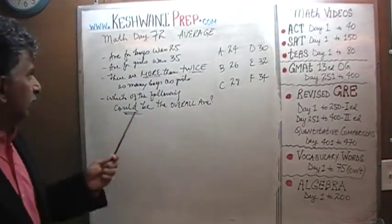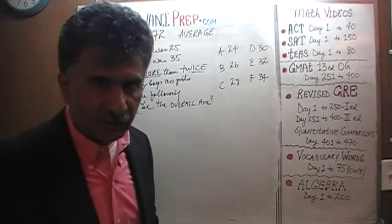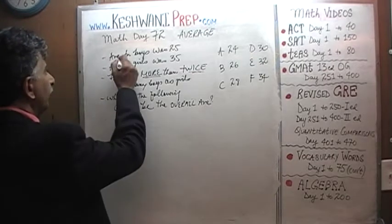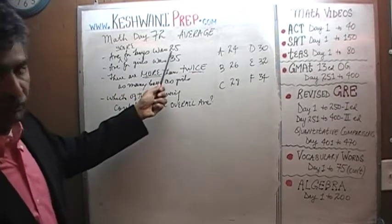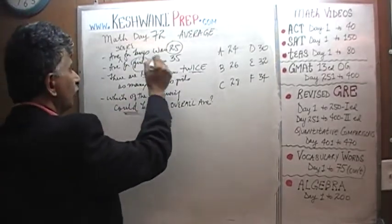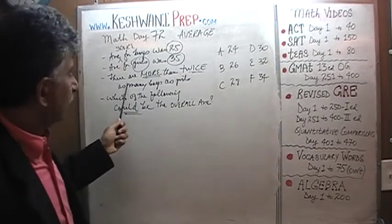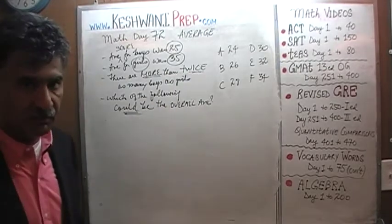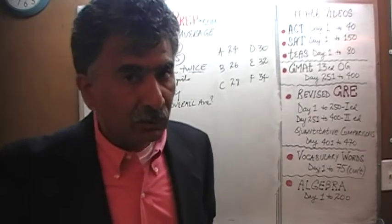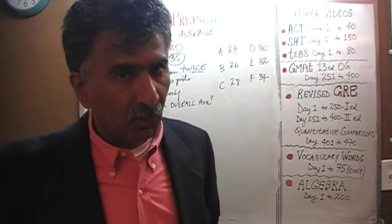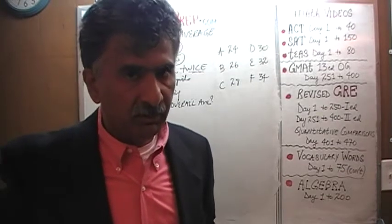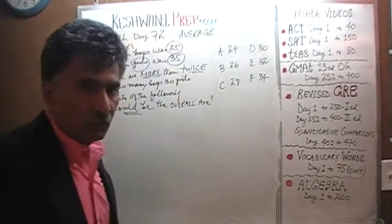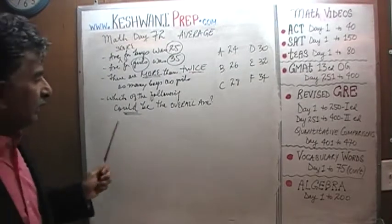Here's the problem. What we are told here is very straightforward, very simple. We are told that an exam was given in the class, and the average score for boys was 25. We are also told that the average score for girls in the exam was 35 points. We are further told that there are more than twice as many boys as girls — not exactly twice, but more than twice as many boys as girls in the class. The question is: which of the following could be the overall average?